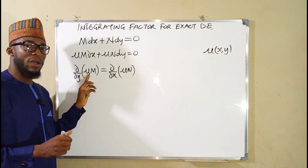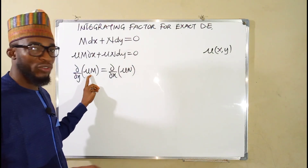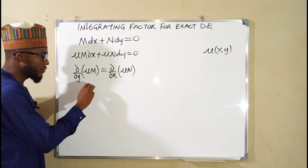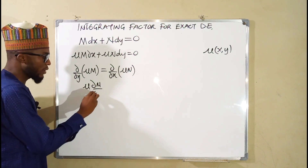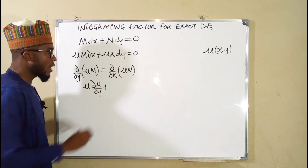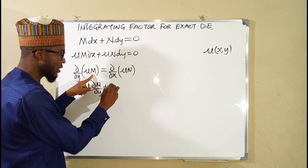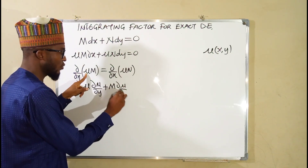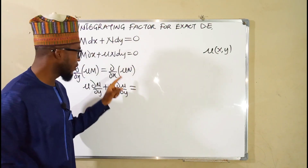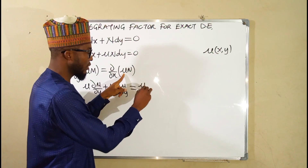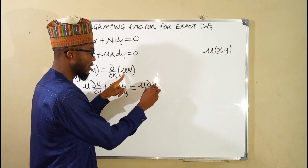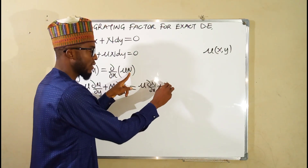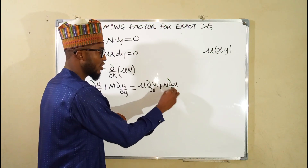Since both mu and M are functions of x and y, we apply the product rule. Keep mu constant and take the partial derivative of M with respect to y, then add: keep M constant and take the partial derivative of mu with respect to y. This must equal: keep mu constant and take the partial derivative of N with respect to x, then add: keep N constant and take the partial derivative of mu with respect to x.